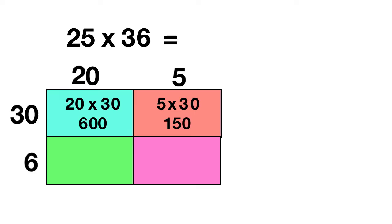In the green box, let's multiply 20 times 6. What does 20 times 6 equal? Well, 2 times 6 is 12, and you need to add 1 zero, so 120.